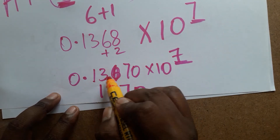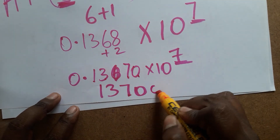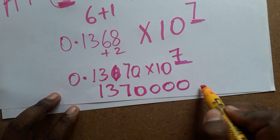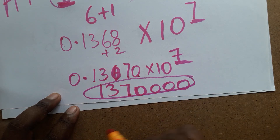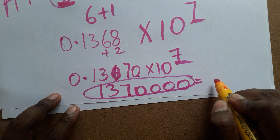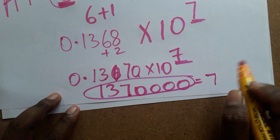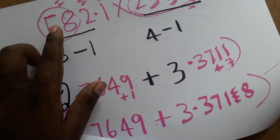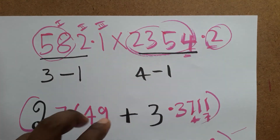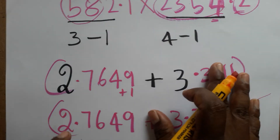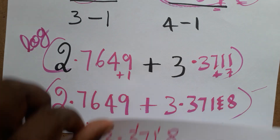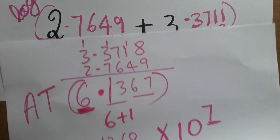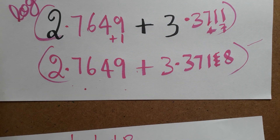So the result is 0.1370 times 10 to the power 7. Moving the decimal 7 places gives 1,370,000. The final answer has 7 digits — which makes sense because the first number had 3 digits and the second had 4 digits, giving 3 plus 4 equals 7. After taking the log and then the antilog, we get our final answer. Thank you everyone — if you like my channel please subscribe.